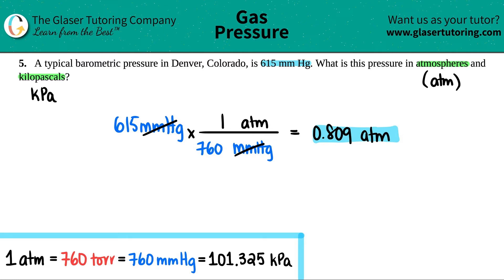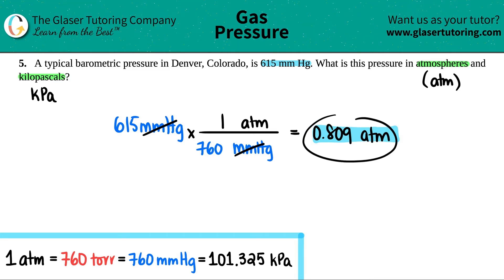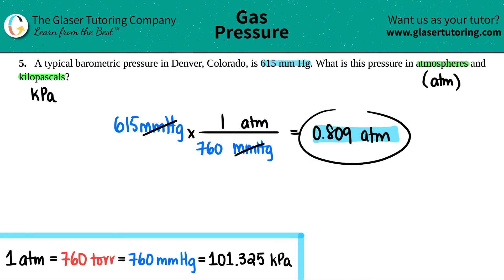So a little bit less than one. Just for reference, one atm is sea level, and Denver starts about a mile above sea level, so it makes sense to have less than 1 atm. As you go higher and higher — even up to Mount Everest — you get very, very low pressures, which is why you can't really breathe up there.